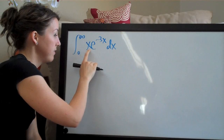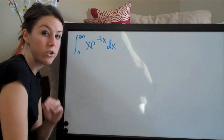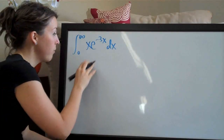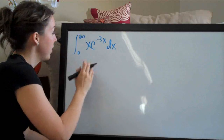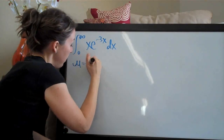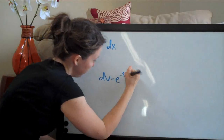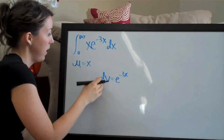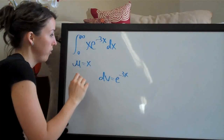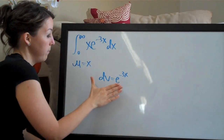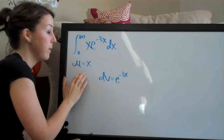If we assign u to x and take the derivative du, that becomes 1, which might simplify our problem. When we use integration by parts, we assign u and dv to values in our problem. So we say u is x and dv is e to the negative 3x dx. Remember, u and dv have to account for everything in the problem — no leftover terms.